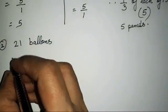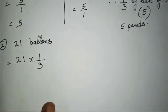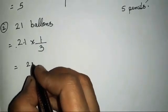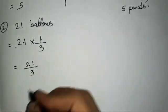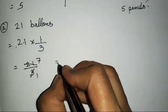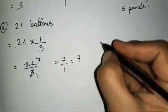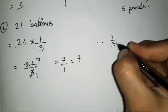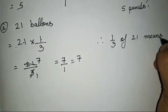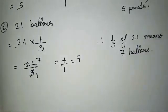For 21 balloons, we calculate 21 × 1/3. So 21×1 = 21/3. Then 3×7 = 21, giving 7/1 = 7. Therefore, 1/3 of 21 balloons is 7 balloons.